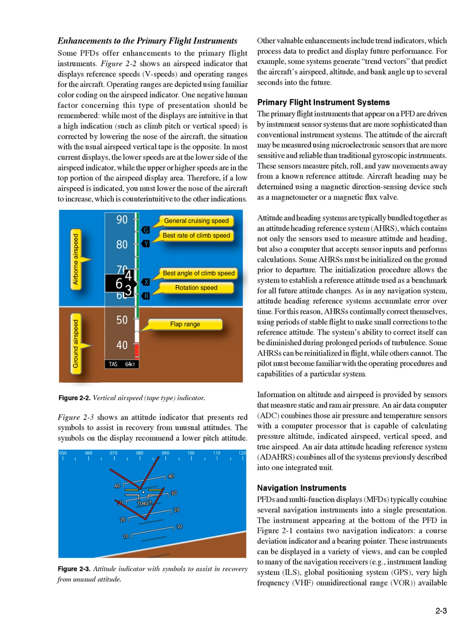Primary Flight Instrument Systems. The primary flight instruments that appear on a PFD are driven by instrument sensor systems that are more sophisticated than conventional instrument systems. The attitude of the aircraft may be measured using microelectronic sensors that are more sensitive and reliable than traditional gyroscopic instruments. These sensors measure pitch, roll, and yaw movements away from a known reference attitude.